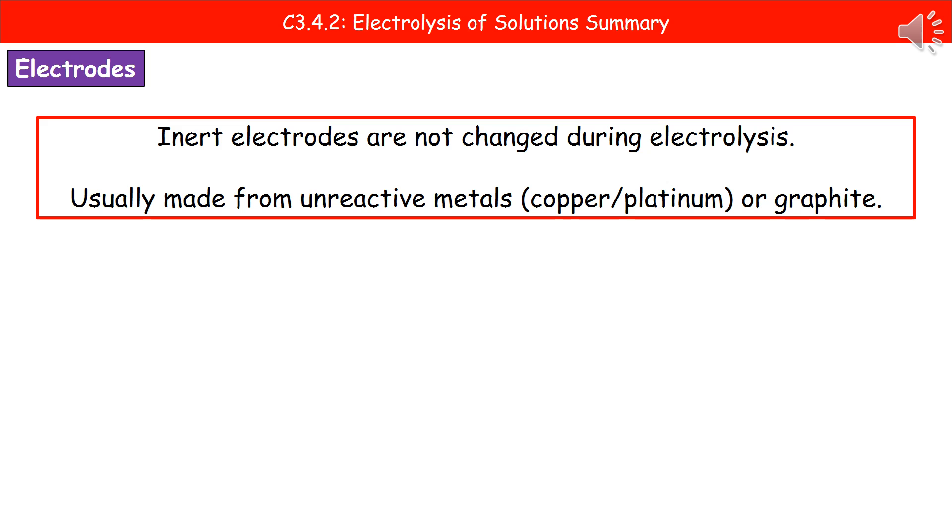First, we need to understand electrodes. We frequently use inert electrodes, which are important because they're not changed during electrolysis. We usually make them from unreactive metals like copper or platinum, or we'll use graphite.